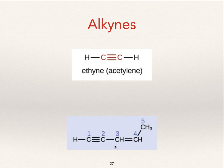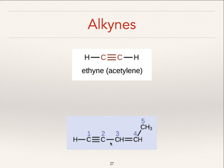This is just another example of a molecule that has single bonds, double bonds, and triple bonds. Because of the triple bond, this molecule would be considered an alkyne. If you took away that triple bond, the molecule would be considered an alkene. If you took away the double bond and the triple bond, then the molecule would be considered an alkane.